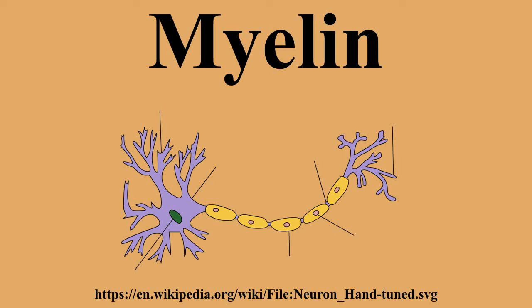In humans, myelination begins early in the third trimester, although little myelin exists in the brain at the time of birth. During infancy, myelination occurs quickly, leading to a child's fast development, including crawling and walking in the first year. Myelination continues through the adolescent stage of life.